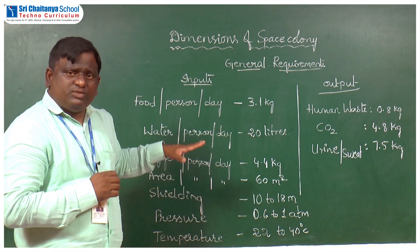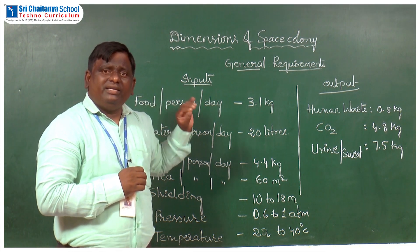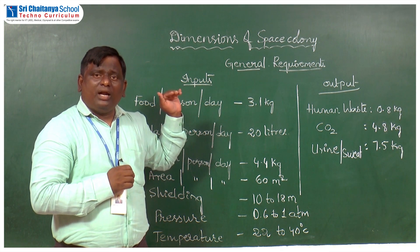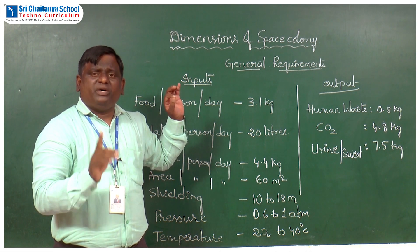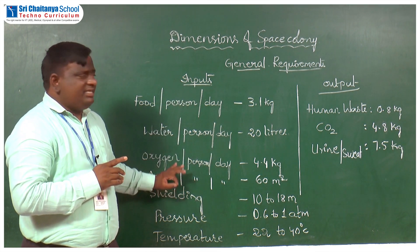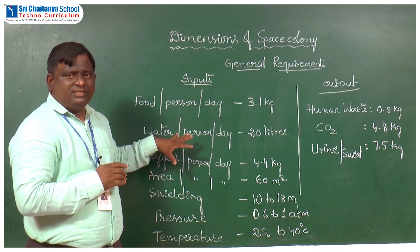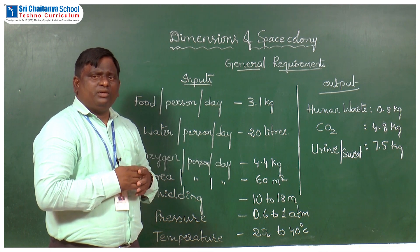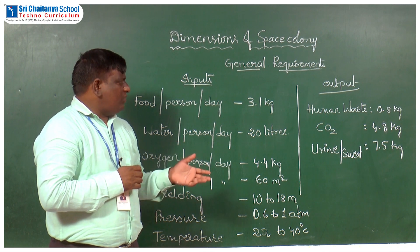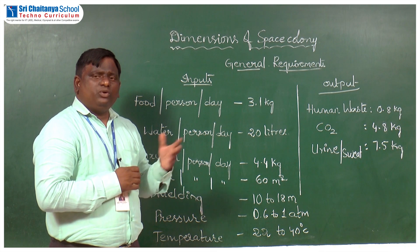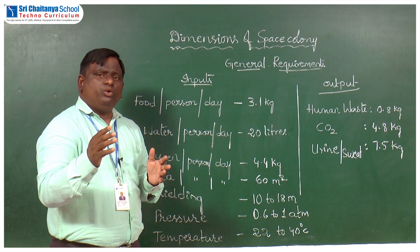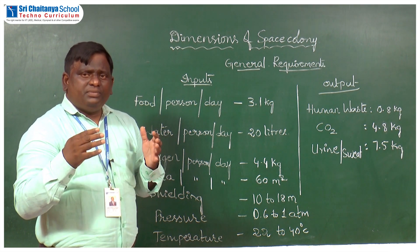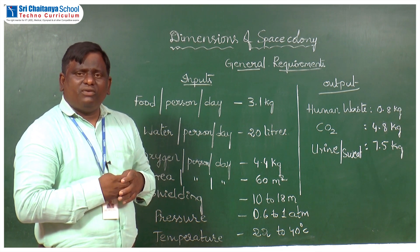These are the input requirements for any space colony. Whatever population you choose — 1 person, 10, 100, 1000, or 1 million — every person should require these inputs. It is our prime responsibility to provide inputs based on the calculations. For example, if accommodating 100 people: food requirement is 100 × 3.1 kg per day; oxygen requirement is 100 × 4.4 kg per day; water requirement is 100 × 20 liters per day. These per-day figures can be converted into per week, per month, or per annum to plan provision of those requirements.